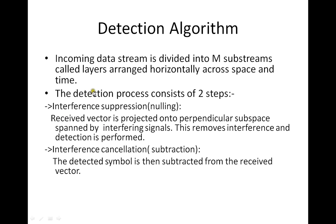The actual detection algorithm used in VBLAST: the incoming data stream is divided into M substreams called layers, arranged horizontally across space and time. The detection process consists of two steps. First is interference suppression or nulling — the received vector is projected onto an orthogonal subspace spanned by the interfering signals, which removes interference so that detection can be performed in the absence of interference.